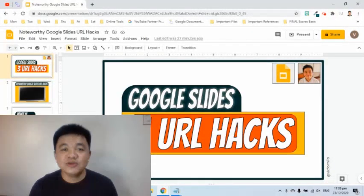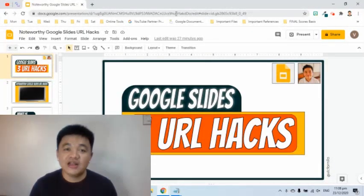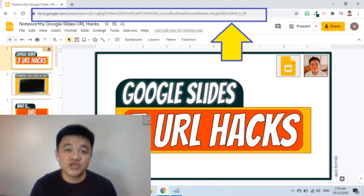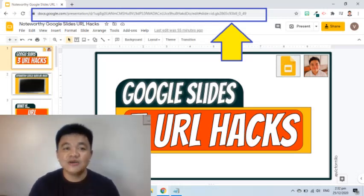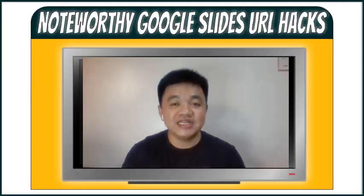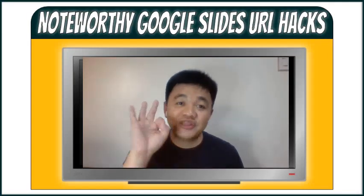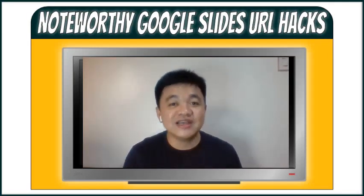For example, this is the Google Slides file I just made. We can find the URL or the web address at the address bar located at the top of the screen. With this link, we can do a number of things, and in this video I am going to share three tips that involve the uses of this link.